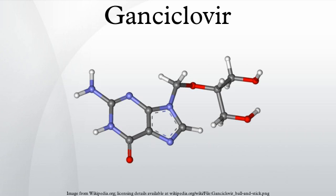Mechanism of Action: Ganciclovir is a synthetic analogue of 2'-deoxyguanosine. It is first phosphorylated to ganciclovir monophosphate by a viral kinase encoded by the cytomegalovirus gene UL97 during infection. Subsequently, cellular kinases catalyze the formation of ganciclovir diphosphate and ganciclovir triphosphate, which is present in tenfold greater concentrations in CMV or herpes simplex virus-infected cells than in uninfected cells.